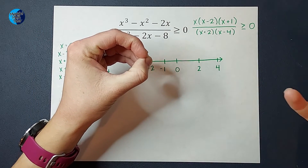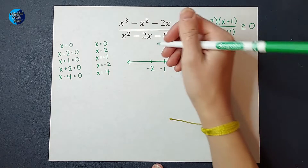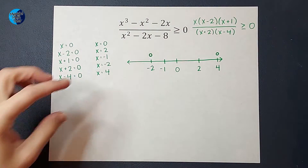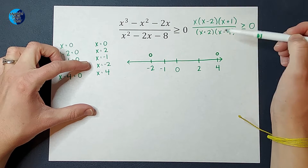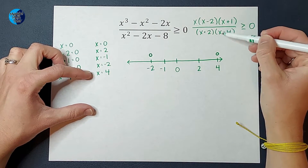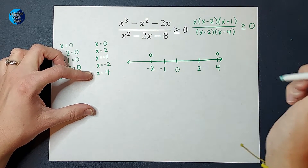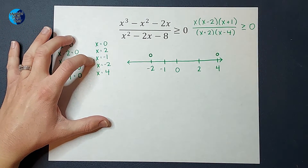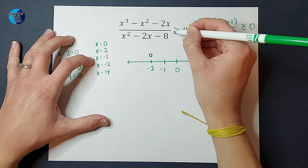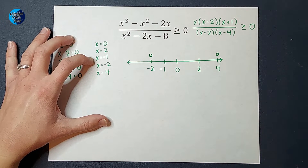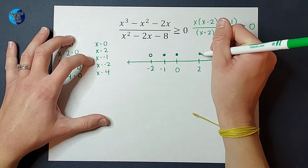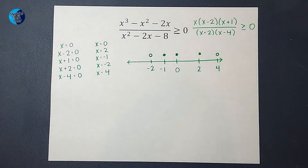I need to know if I have an open or a closed circle. Negative 2 and 4 are both going to be open circles, because if I were to plug in negative 2 for x, it would make my denominator 0, which is a no-no in math — we don't do 0s in denominators. Same thing for 4. For the other ones — 0, 2, and negative 1 — because the inequality is greater than or equal to, those are going to be closed circles. If that equal to weren't there, those would also be open circles.